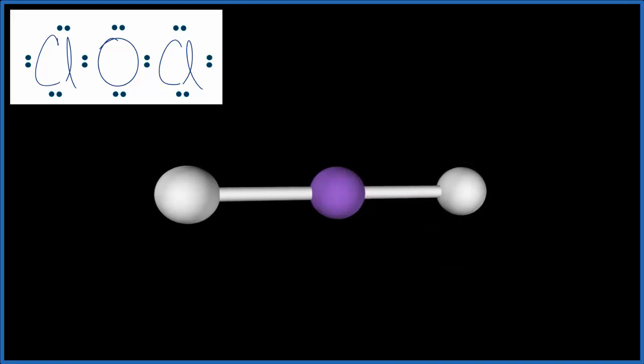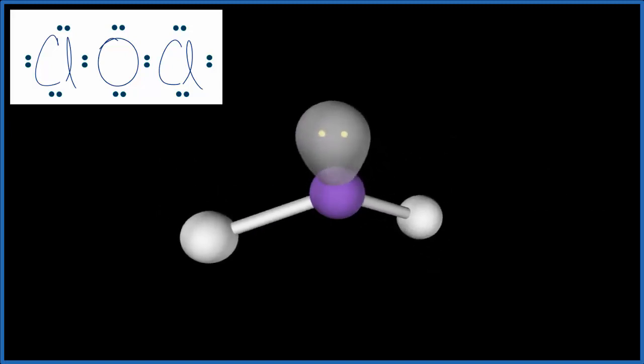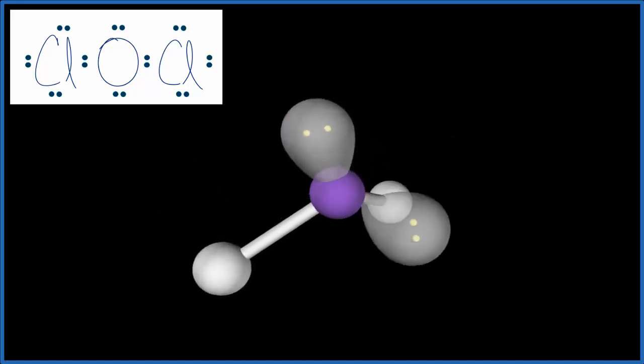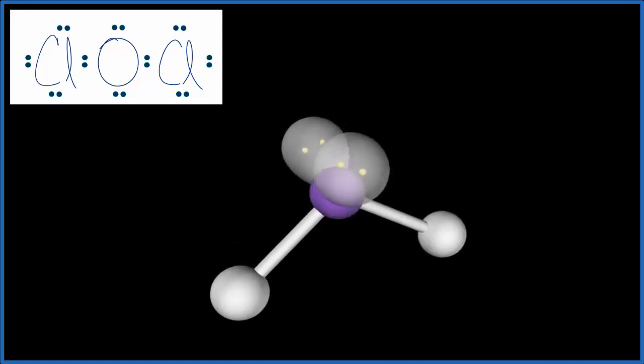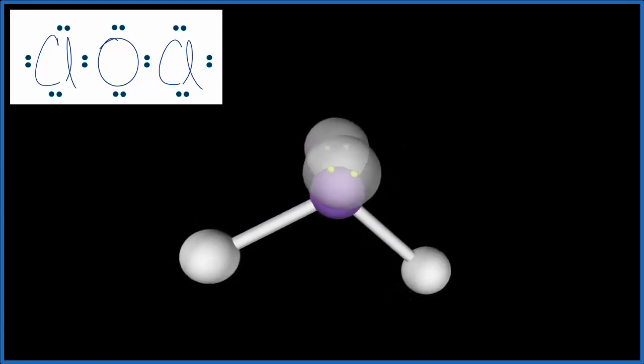But then we have the two lone pairs. We add one, and it forces everything down. We add one more, and it goes up there, and it continues to force down these chlorine atoms. So that's what gives us this bent molecular geometry.